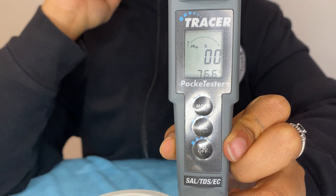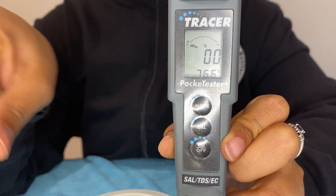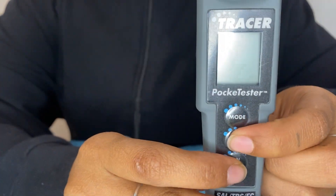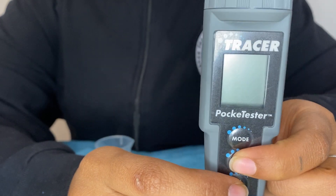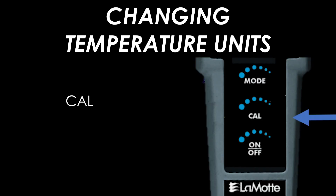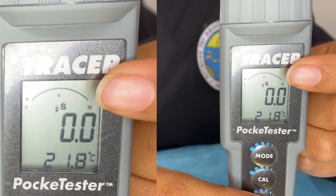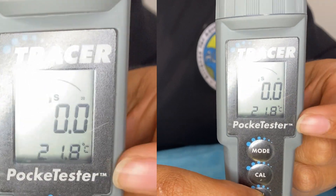The temperature will be displayed at the bottom of the screen. If the units are in Fahrenheit and you want to switch to Celsius, or vice versa, press and hold the CAL button and then quickly turn the meter on with the on/off button. This should switch your unit between Celsius and Fahrenheit as you desire.